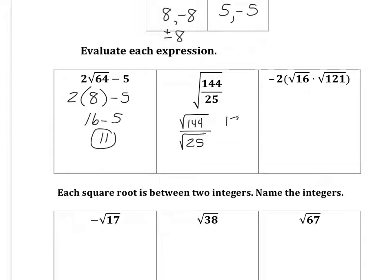Square root of 144 is 12, and the square root of 25 is 5. So, 12 fifths, you can also write that as 2 and 2 fifths.